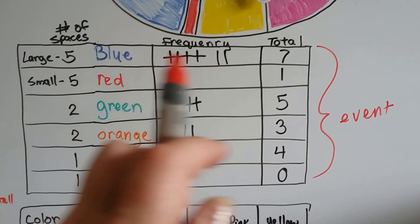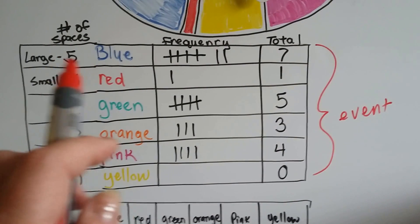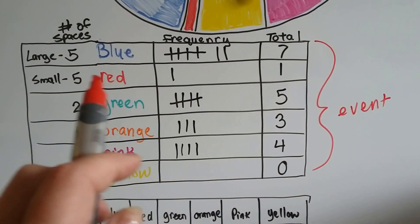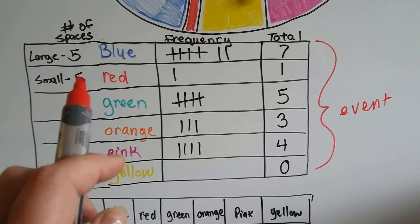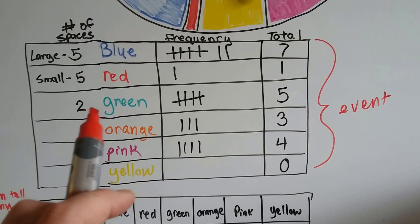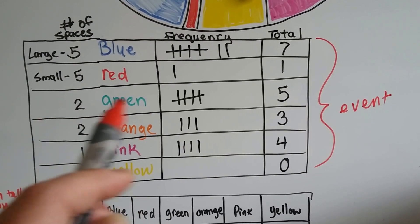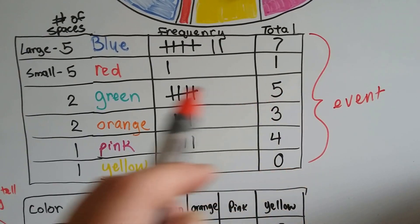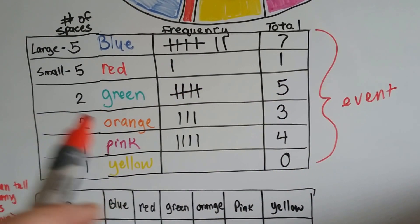And I figured I was going to get a lot of blue, and I did. I got seven, because there's five large ones. I only got one red one. I was surprised I got any at all, because they were so small. What surprised me was there's only two green spaces, and I got five of them on five different spins. It landed on green.